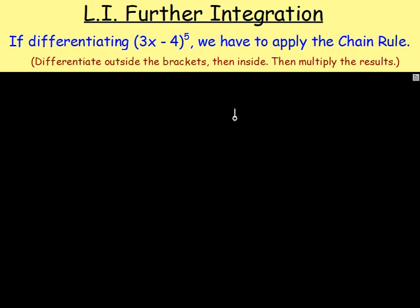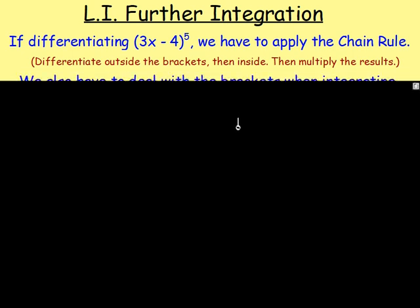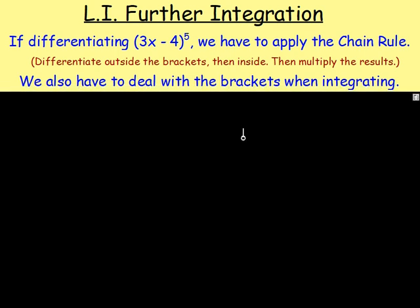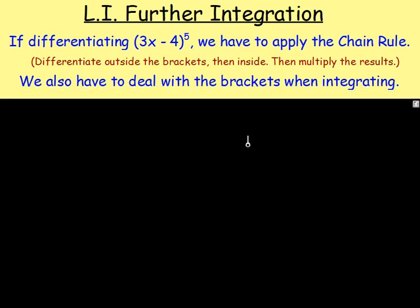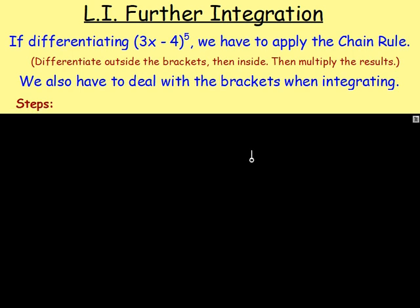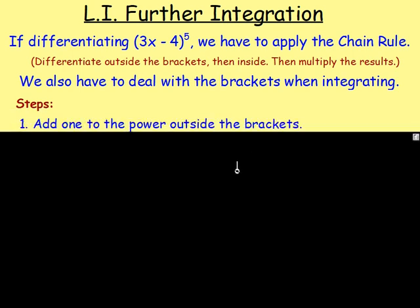What we've also got to do is if we want to integrate something like (3x − 4)^5, we also have to deal with the brackets. Here is how we do it. So the steps: Step 1, you would add 1 to the power outside the brackets. So (3x − 4)^5 — the 5 would go up to a 6, giving you (3x − 4)^6.